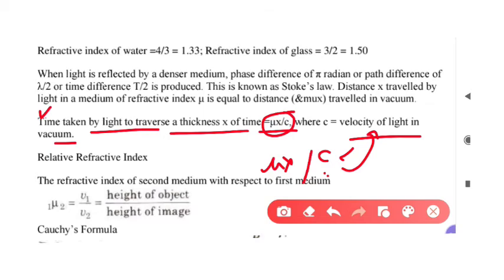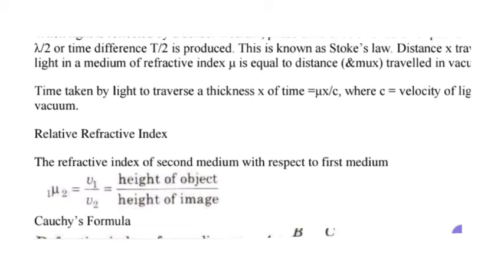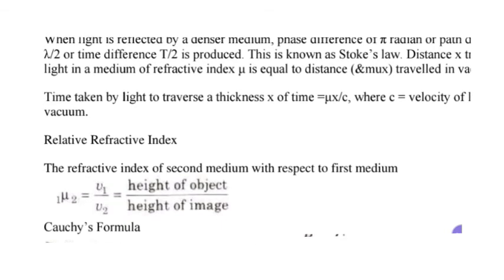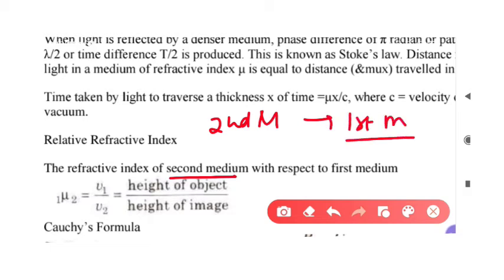If we look at the relative refractive index formula — when we consider the refractive index of a second medium with respect to the first medium — the formula involves the ratio of speeds or sines of angles. The refractive index of medium 2 with respect to medium 1 equals the ratio of the speed of light in medium 1 to the speed of light in medium 2.